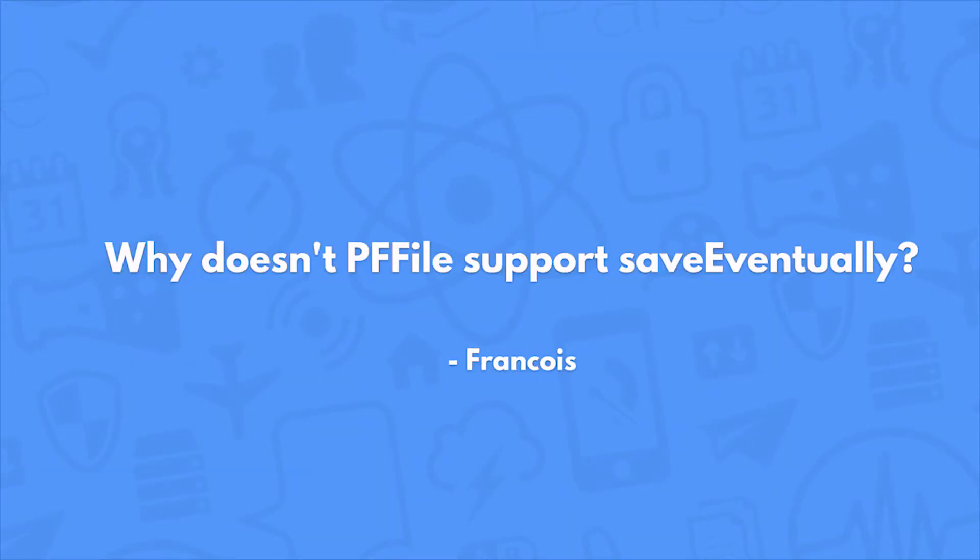Why doesn't PFFile support save eventually? Save eventually works really great when you're saving an object — you're just saying save this object eventually and you don't care when that operation completes. The problem with a file is that first you need to save the file itself, then you need to get the path of the file and save that. If you just use save eventually on the PFFile itself, you won't know the actual address of the file once it's saved and you won't be able to save it. So it's not a good idea.